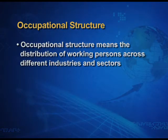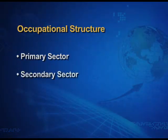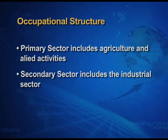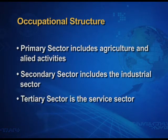Occupational structure means the distribution of working persons across different sectors — that is, the three sectors: primary, secondary, and tertiary. This means the percentage of population engaged in each of these three sectors, i.e., how much of each sector is providing employment to the working population. The primary sector includes agriculture and allied activities, the secondary sector includes the industrial sector, and the tertiary sector is the service sector.